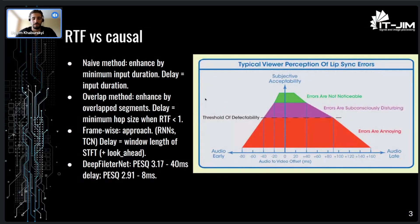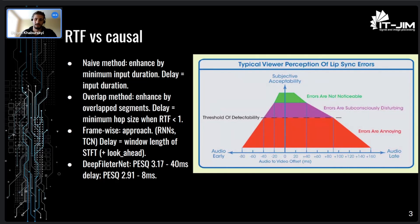If we are talking about classical speech enhancement models, we can use them for streaming audio in several approaches. One method is enhancing speech chunk by chunk — for example, when the model was trained on data with a minimum input duration of two seconds, we divide our stream and enhance each two-second segment, but this will create a delay equal to the input duration.